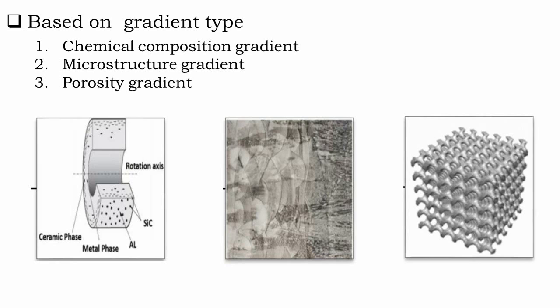The second type is microstructural gradient, where the microstructure is tailored in such a way that different microstructures are produced in the material, which are made to change gradually so as to achieve the required properties. This microstructural gradation is generally achieved during the solidification process of a material. The third and final type is porosity gradient, in which the porosity in the material is made to change with the change in the spatial position of the bulk material. The shape and size of the pore are designed and varied according to the required properties of the functionally graded material.